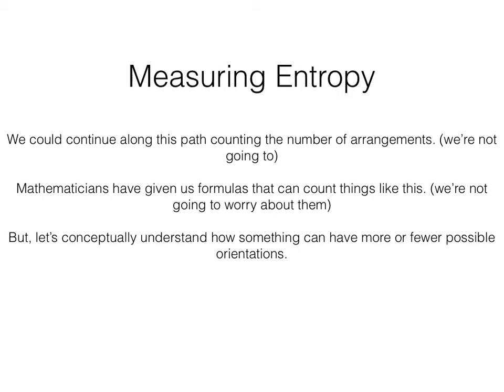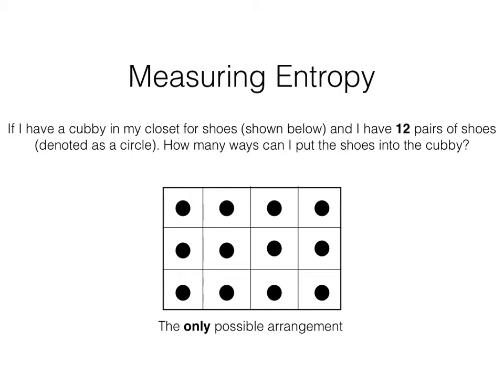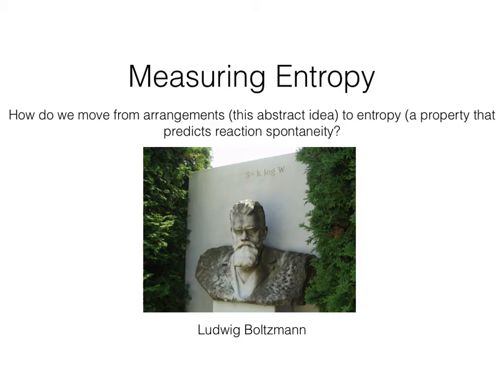If we go back to our cubby — if I had 12 pairs of shoes, there are fewer orientations possible than when I have seven pairs of shoes. With 12 pairs of shoes, there is only one way for me to put my shoes in my cubby. And this idea of arrangements is directly related to entropy.